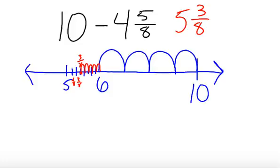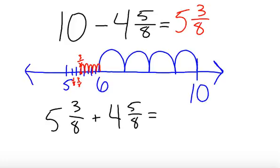To check my work on this problem, I'm going to go back the other way and add five and three eighths plus four and five eighths. And since I'm adding mixed numbers, I'm going to add the wholes. Five plus four equals nine.